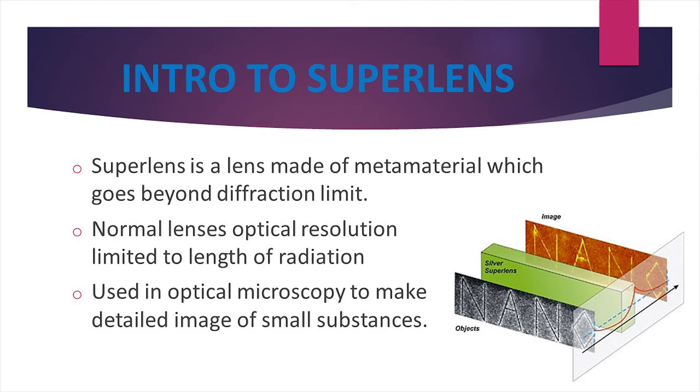Next, let us look at what a superlens is and what are its applications. As we know, superlenses are made of metamaterial which has negative index. It is this property of metamaterial which enables the superlens to overcome the diffraction limit. Hence, they are used in optical microscopy to obtain high definition images of small substances such as viruses. Normal lenses have optical resolution limited to the wavelength of radiation. Superlenses have overcome this limit because of their negative refractive index.